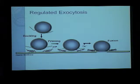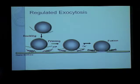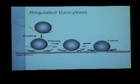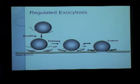Exocytosis is a process by which cells package their secretory contents into vesicles and release them into the extracellular medium. While most cells have a pathway called constitutive exocytosis, cells specialized for secretion — such as neural cells or endocrine cells — have an additional pathway called the Regulated Exocytosis pathway.